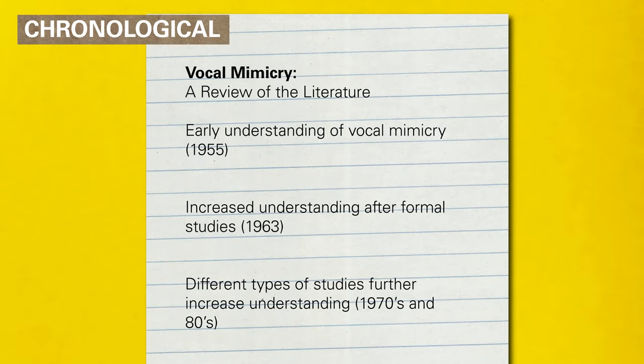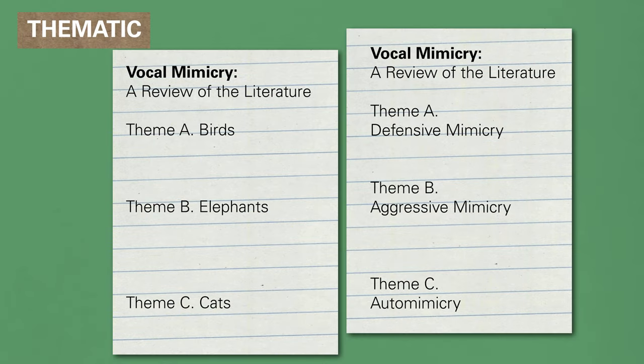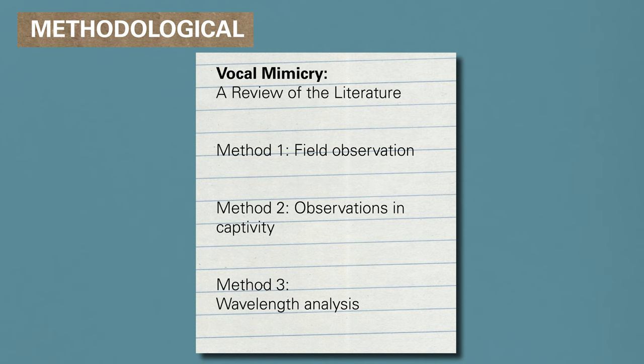Depending on what fits your topic best, a few options for organizing your review include: chronological, which shows how findings progressed over time; thematic, which includes subheadings specifically related to your topic and shows how different components of the literature tie into your argument; and methodological, which focuses on the research methods used in all the sources you found. However you decide to organize your lit review and synthesize the information, the goal is still the same — to present your reader with a broad overview of the major research findings related to your topic.